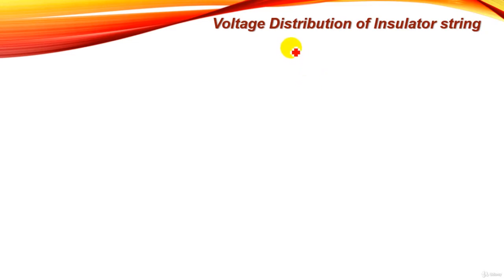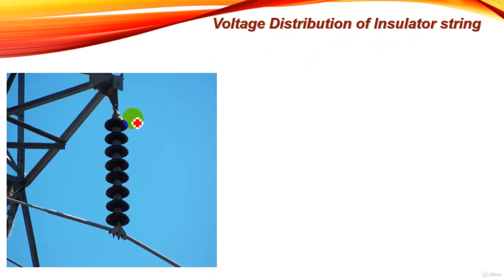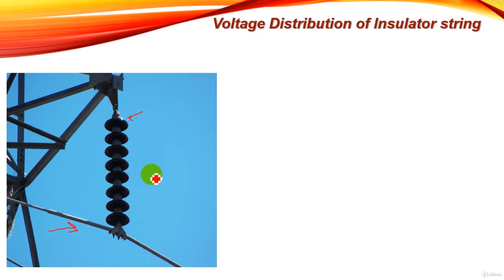In this tutorial we will understand how to determine the voltage distribution of an insulator string. Here we have an insulator string consisting of 8 units, which holds and carries the high voltage conductor. For example, if the high voltage conductor holds a voltage of 66 kilovolts, the whole insulator string should hold that same voltage. We want to know what voltage each unit of the insulator string holds.